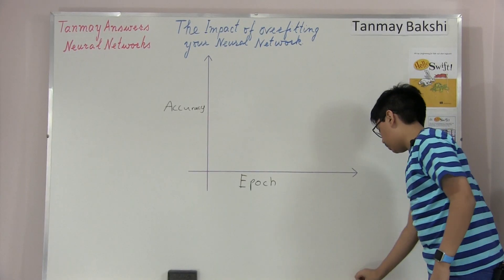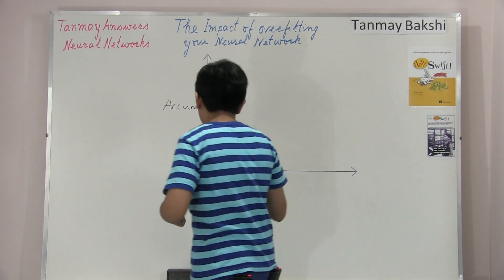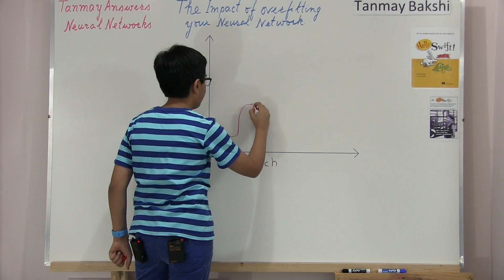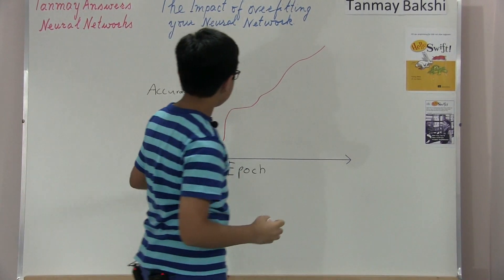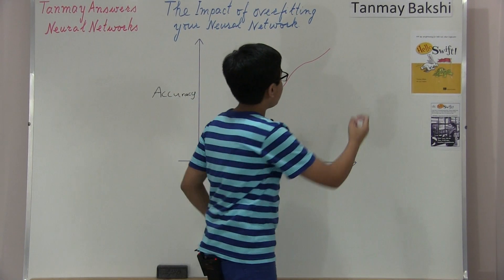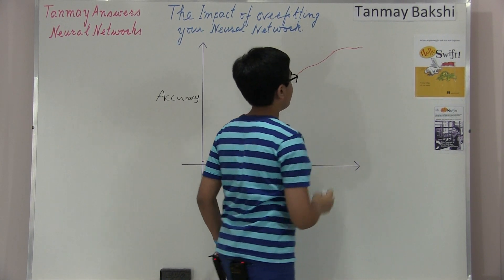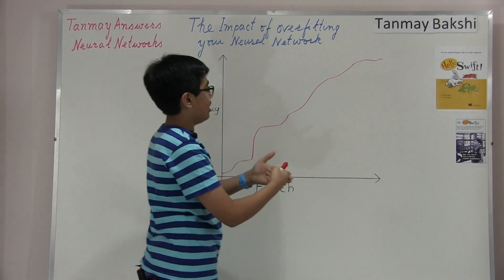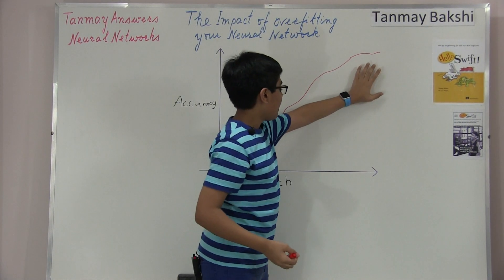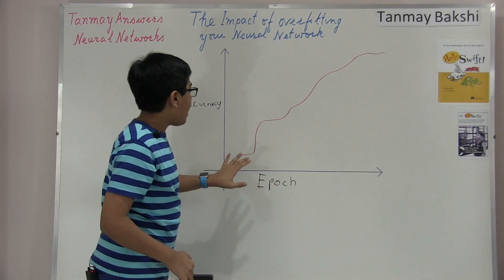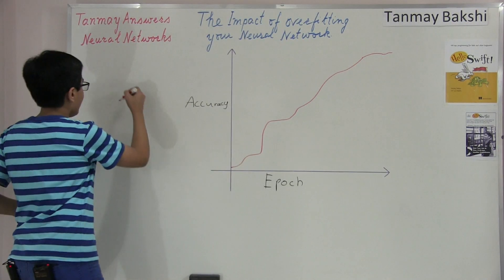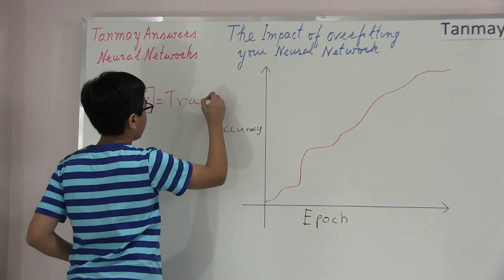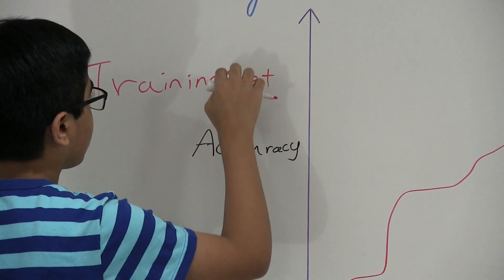Let's say this is our tic-tac-toe neural network. We start from a very, very low accuracy, but over time — over a few epochs — the training set accuracy goes higher and higher. Then we start to stall a little bit, not really seeing much of an increase, basically reaching that limit where it's hard to increase the accuracy further. This red marker signifies the training set of this neural network.